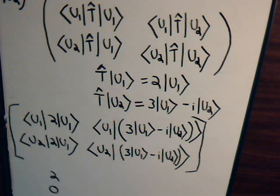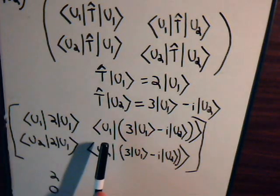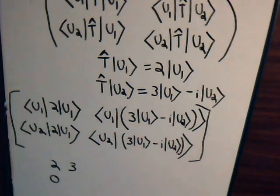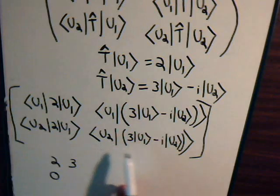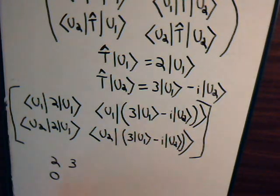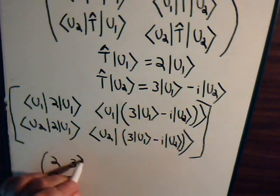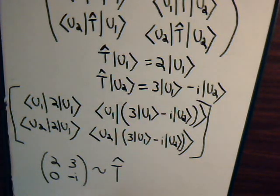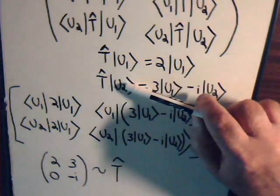The inner product of U1 with U2 is 0. And the inner product of U1 with itself is 1, times 3, giving 3. Then the inner product of U2 with U1 is 0. And the inner product of U2 with itself is 1, times negative i, giving negative i. So this matrix is the representation of our operator T with respect to basis vectors U1 and U2.